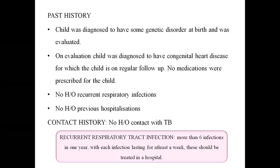Contact history: no history of contact with tuberculosis. The definition of recurrent respiratory tract infection: more than six infections in one year, with each infection lasting at least a week, and treated in a hospital. A Down syndrome child due to hypotonia and frequent aspirations may have recurrent respiratory tract infections. If the child has heart disease, this may also lead to recurrent RTIs.